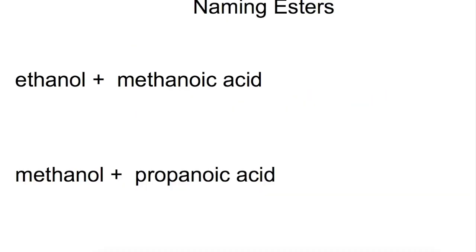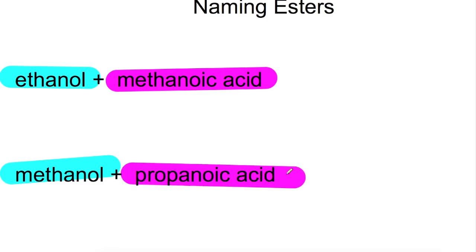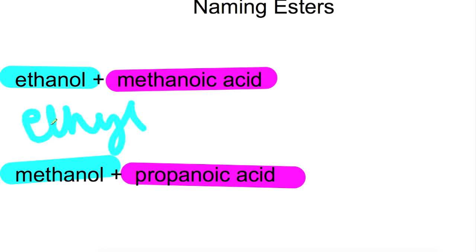Now let's look at naming esters. The ester name comes in two parts: the first part comes from the parent alcohol and the second part from the parent carboxylic acid. If the parent alcohol is ethanol, you change the ending to give ethyl. The parent carboxylic acid in the first example is methanoic acid, so the ending becomes -oate.